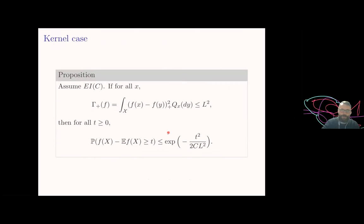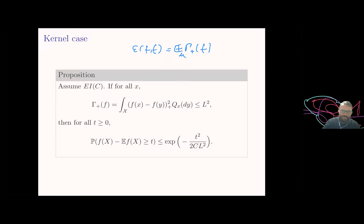In the kernel case, the Dirichlet form was already given by the expectation of gamma_+, so we do not lose the factor of 2 and we get a better constant. This will be useful since many of our examples are in the kernel case.